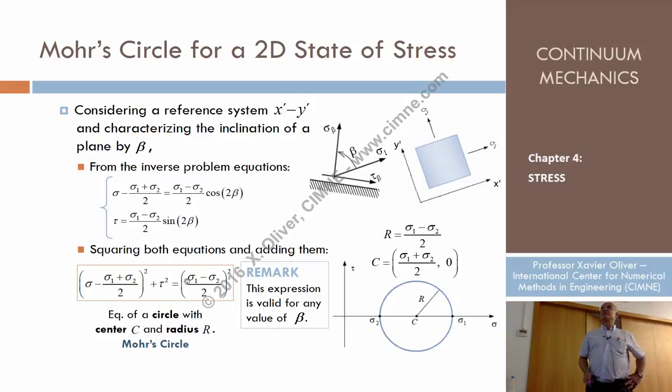And here we have cosine squared 2 beta plus sine squared 2 beta, which is 1. So beta disappears here. So that is an equation that has to be fulfilled by all sigmas and tau that I could obtain by any beta.